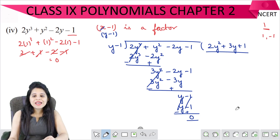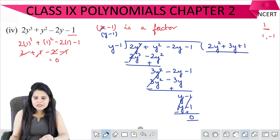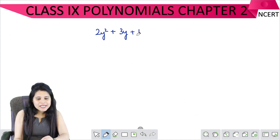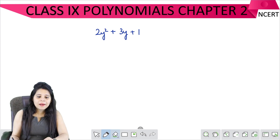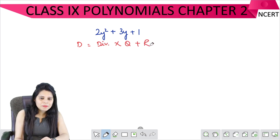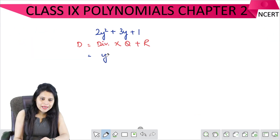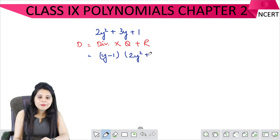So the quotient here is 2y squared plus 3y plus 1. The remainder is 0.